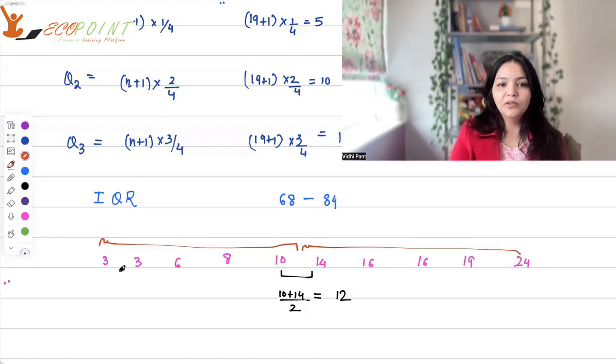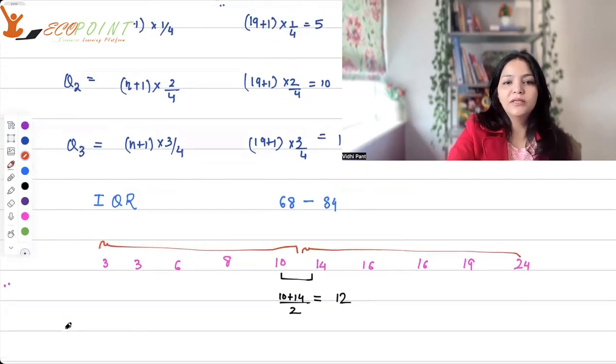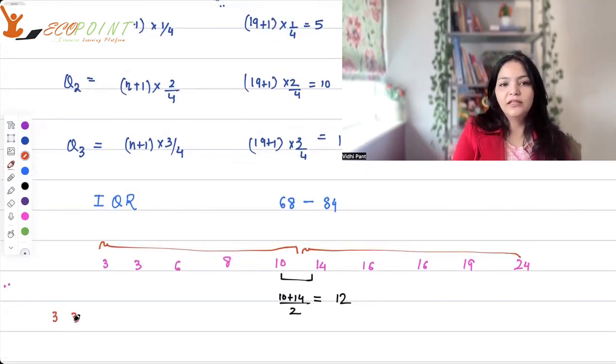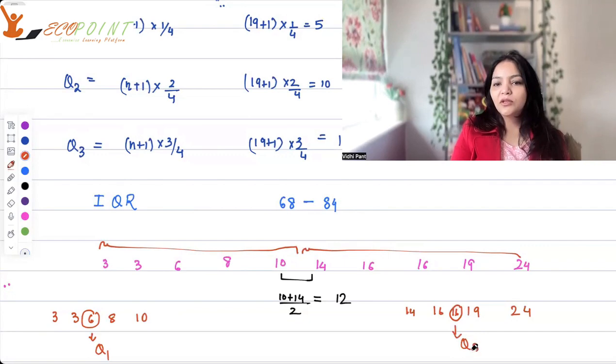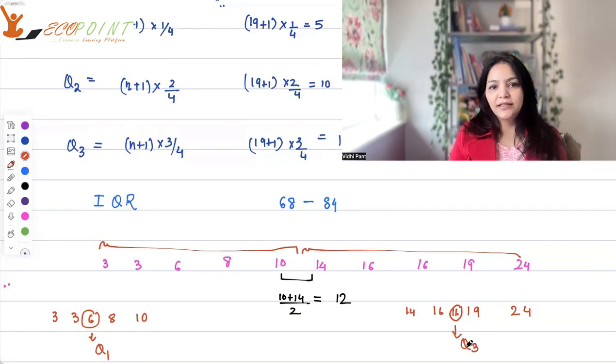So, what is the median for 3, 3, 6, 8, 10? The median is 6. So, 6 becomes your Q1 and 14, 16, 19, 24. 16 is coming two times. 14, 16, 16, 19, 24. What is the median for that? 16 is the median for that. So, that becomes your Q3 and that's how you can get your Q1, Q3 when your data set is even.